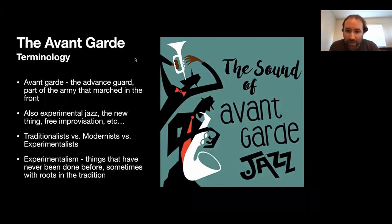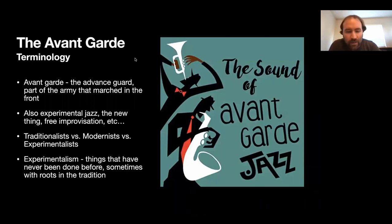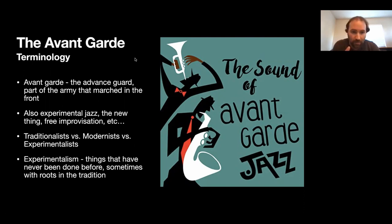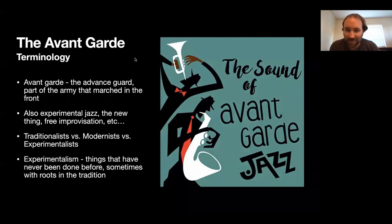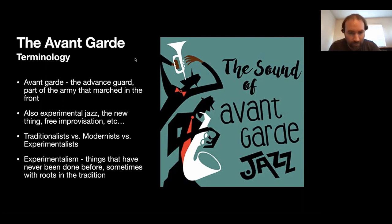Modernists have a foot in both the past and the future — a little bit of the traditionalist and a little bit of the experimentalist. This could be musicians on the cover of Downbeat magazine like Donnie McCaslin or Kurt Rosenwinkel — playing original music in original ways, but also perfectly happy to play Great American Songbook jazz. Experimentalists are on the very forefront of doing things that are not widely accepted at all, and sometimes get quite a bit of flack for trying new and experimental things.